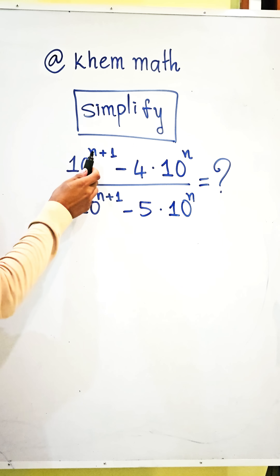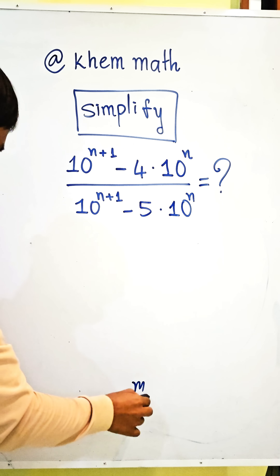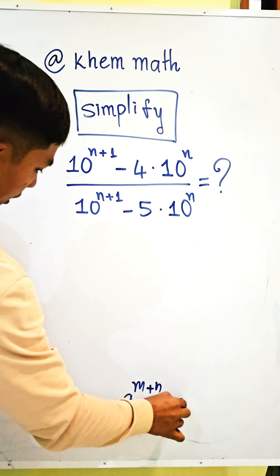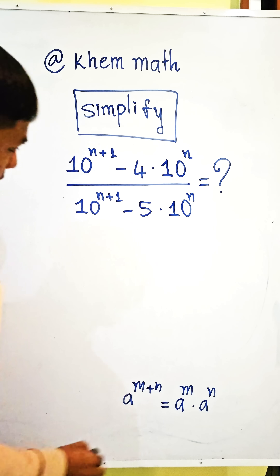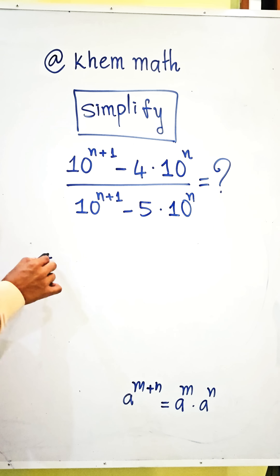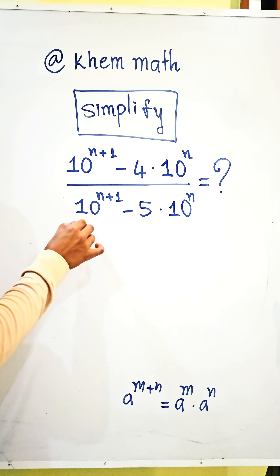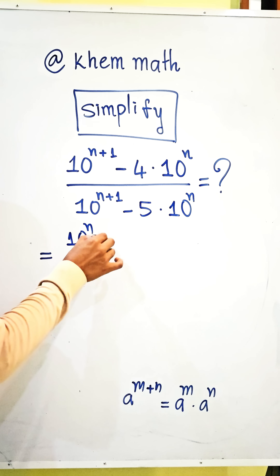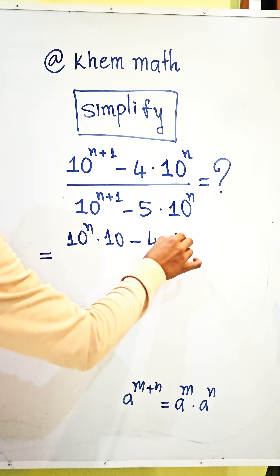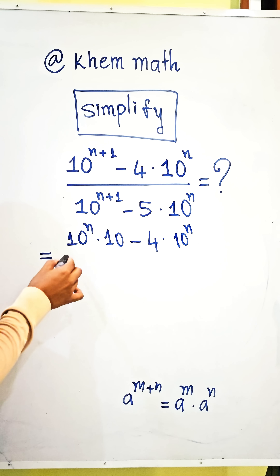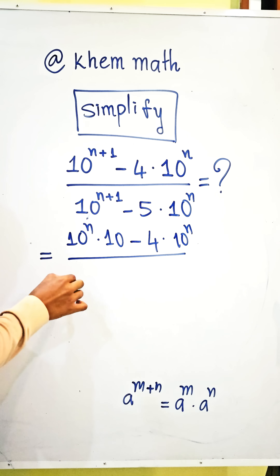Here we use the formula a power m plus n equals a power m times a power n. So we write 10 power n times 10 minus 4 times 10 power n in the numerator.